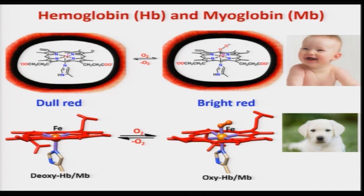I have discussed how the heme centers bind dioxygen in hemoglobin and myoglobin. The iron(II) heme center converts to iron(III) in oxyhemoglobin or oxymyoglobin, and dioxygen actually converts to O₂⁻ which is superoxide. During this process there is a color change: in the deoxy form it was a dull red, while it becomes bright red after dioxygen binding.